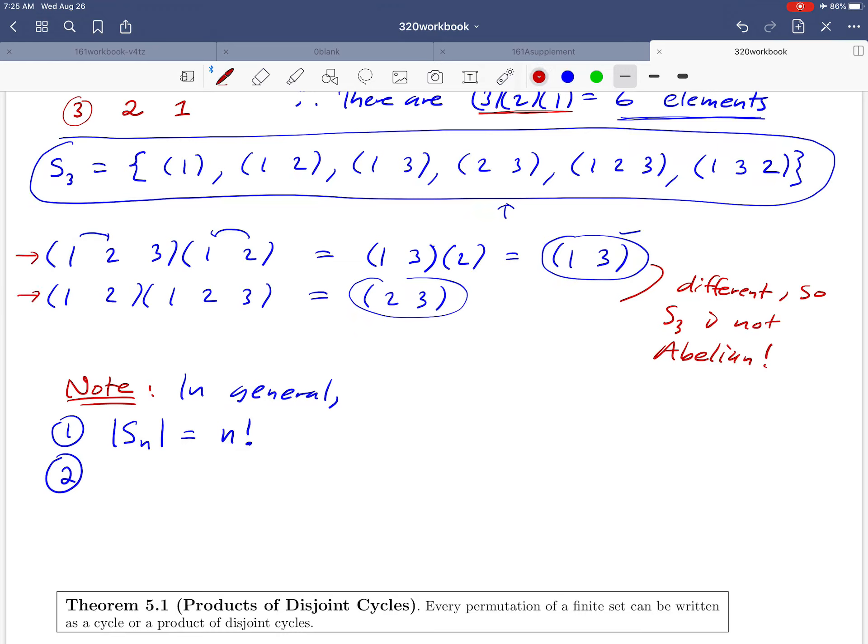And then the second comment is that this calculation that we did up here was no accident. In any symmetric group where n is greater than or equal to 3, you can find examples of permutations where if you compose them in opposite orders you don't get the same thing. That tells us that Sn is not abelian for all n greater than or equal to 3.